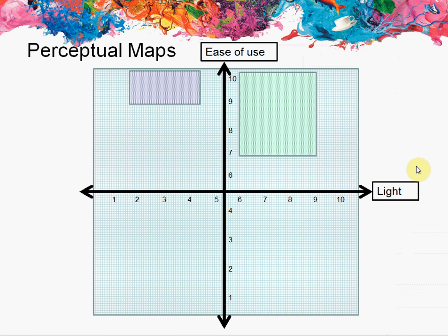This is part of segmentation. So you're actually starting to segment the market based on their needs. Instead of where they live or who they are, which is traditional sort of segmentation variables of geographic and demographic, you're starting to use benefit or use segmentation, which is a far more advanced form of segmentation.